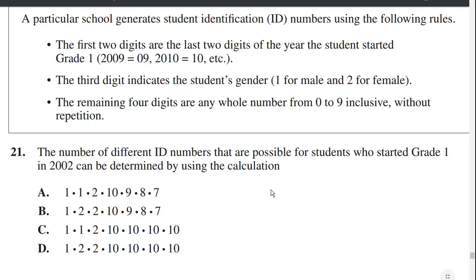If you started grade one in 2002, your first two digits are determined for you — they are 02, and that's the only possibility. So we start with one times one for the first two digits. The third digit has two possibilities because there are two genders, so the next multiplication is 2. So it's 1 times 1 times 2.